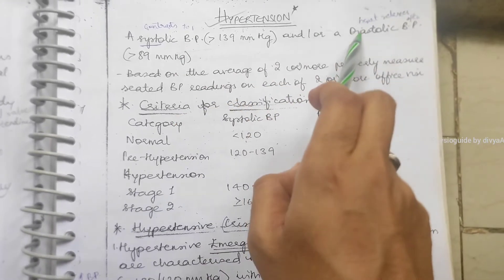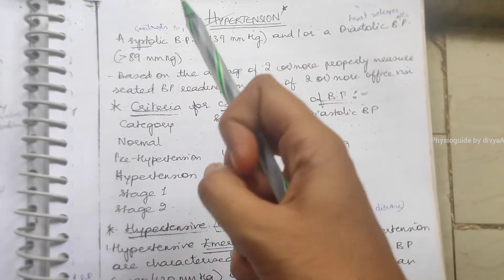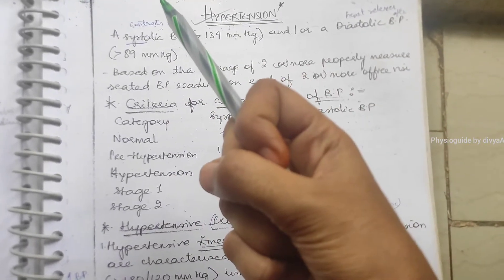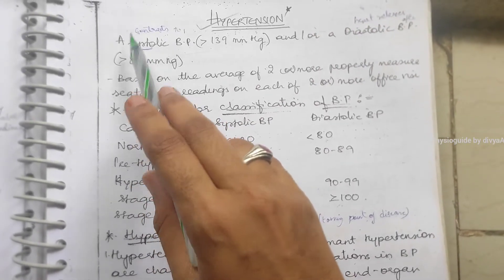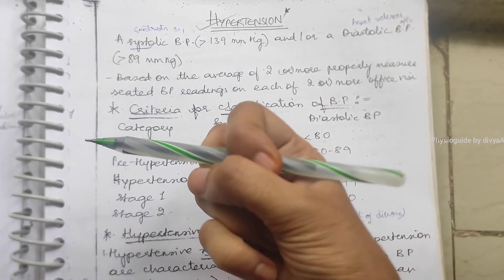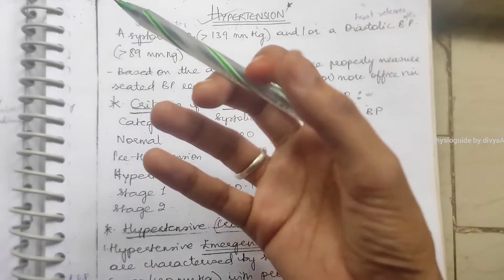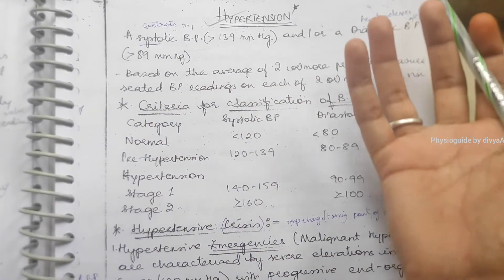The way the heart pumps, heart contraction, is systole and heart relaxation is diastole. When the heart contracts, the blood is pumped out and when the heart relaxes, the blood is stored inside.